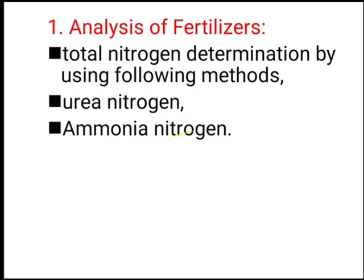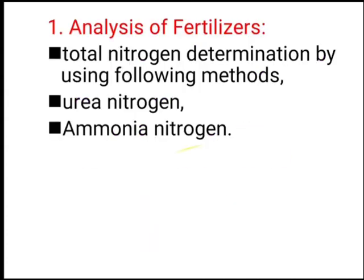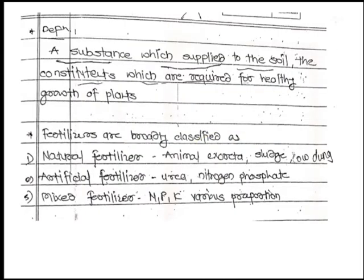Today we are going to see these two methods for total nitrogen determination: first one is the urea nitrogen method, and the second one is the ammonia nitrogen method.